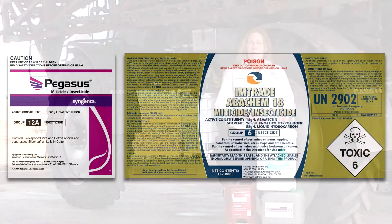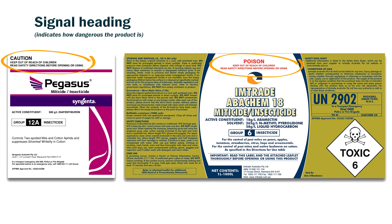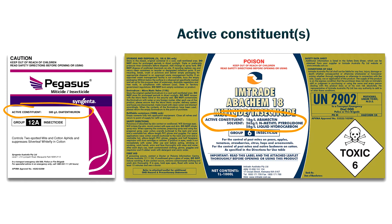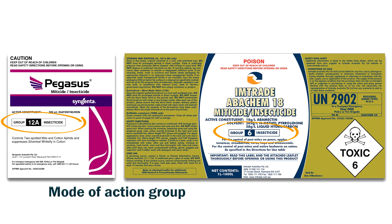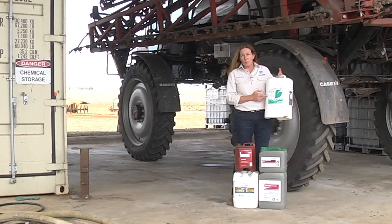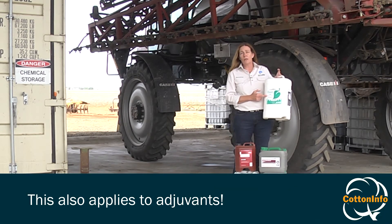Some of the things we find on the label: the signal heading tells us how dangerous the product is, the trade name, the active constituent, and the mode of action — which is really important for our resistance management. Then we have a section called the statement of claims. This is what the product is actually registered to do, so it may list specific pests, crops, or situations. It's really important when choosing a product to make sure it's going to do what you want it to do and that it's registered for that.